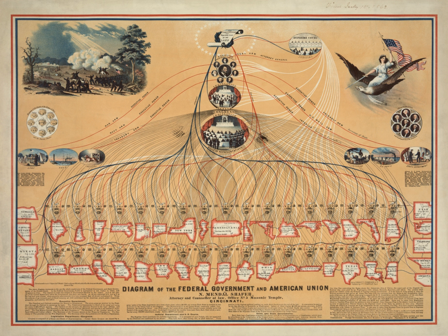The highest elected official of a town or city is usually the mayor. In New England, towns operate in a direct democratic fashion, and in some states, such as Rhode Island, Connecticut, and some parts of Massachusetts, counties have little or no power, existing only as geographic distinctions. In other areas, county governments have more power, such as to collect taxes and maintain law enforcement agencies.